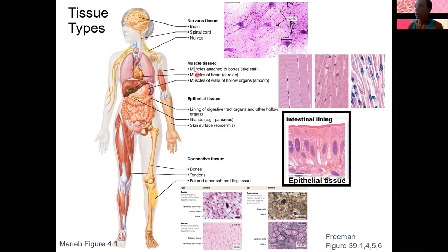Muscle tissue has three different types: skeletal, cardiac, and smooth. All muscle tissue contracts, which is important because it allows for movement — either movement of your whole body or movement of something inside your body, such as blood flow or food through your digestive tract. Those cells are specialized to contract; the proteins they make allow for contraction and a lot of ATP generation as well. This relates to cell specialization we talked about last week.